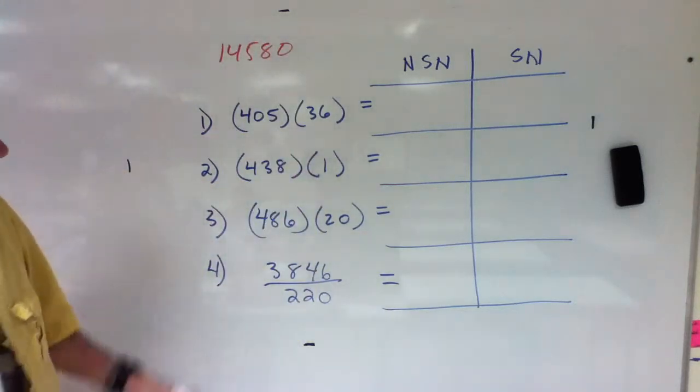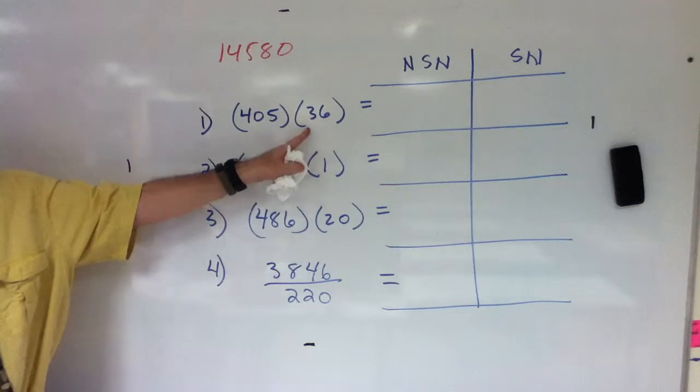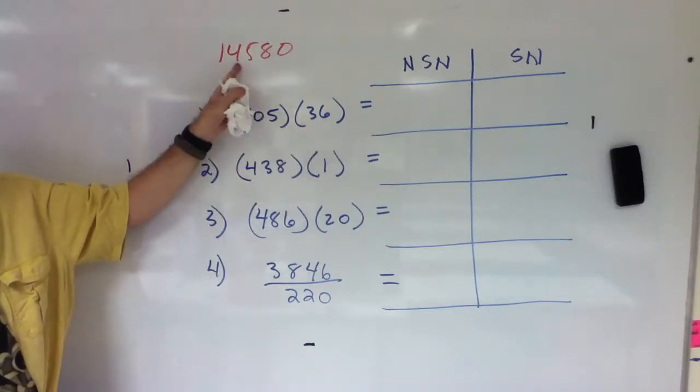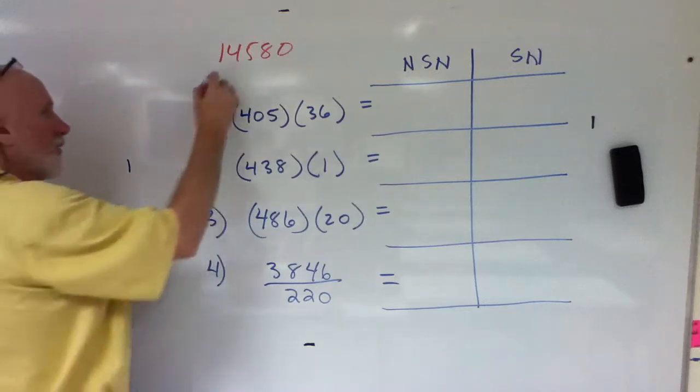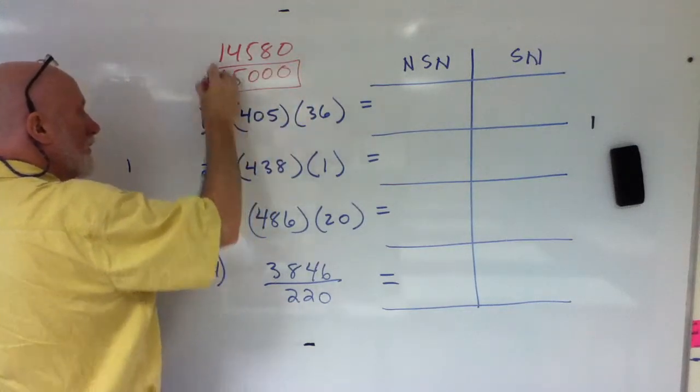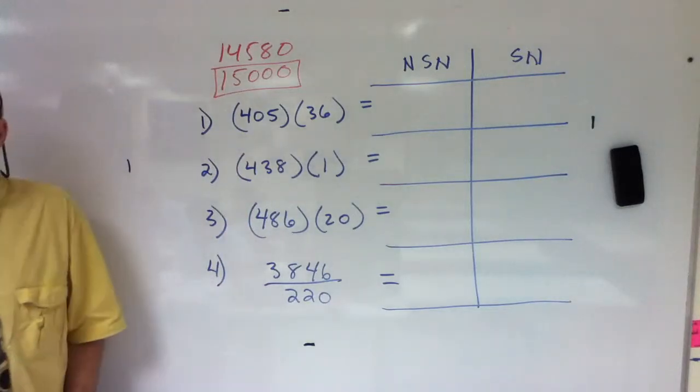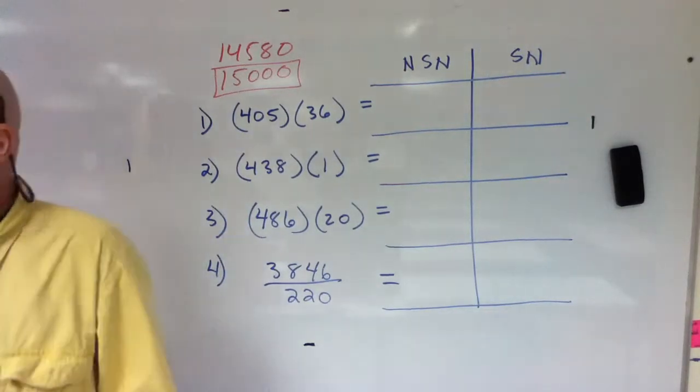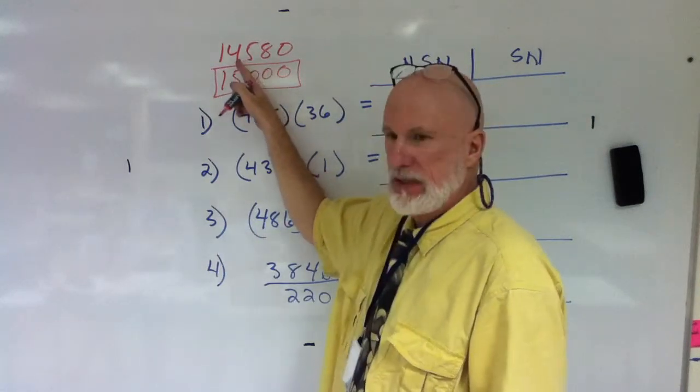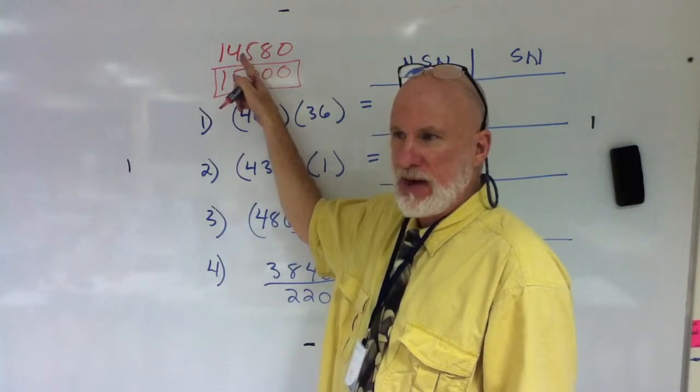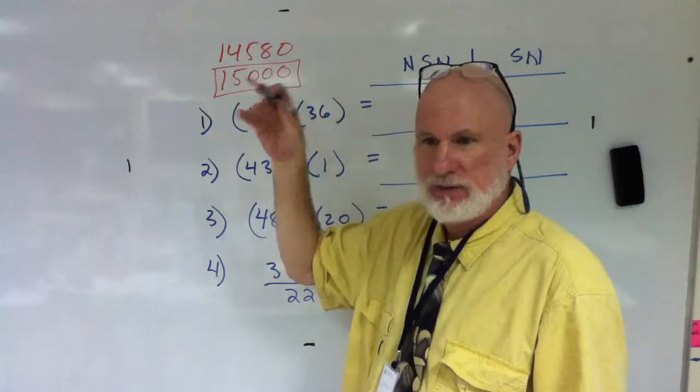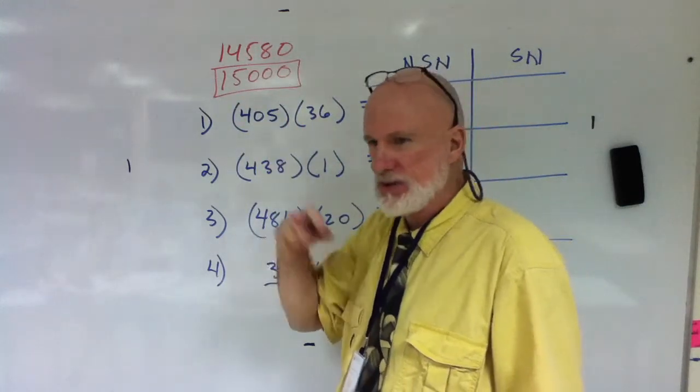But I can only have two significant figures, therefore this becomes what right now? There is a rule that says if this is a five and that's an even number you don't round it. If it is an even number, we don't use that rule. Five is up, four is not, four stays the same.